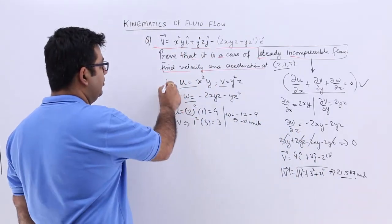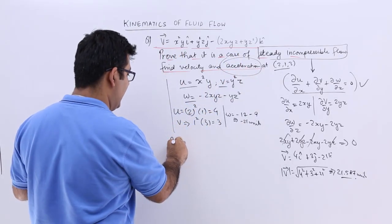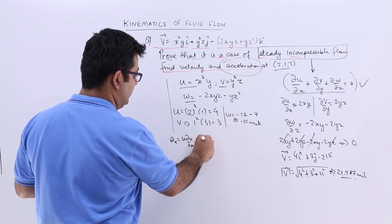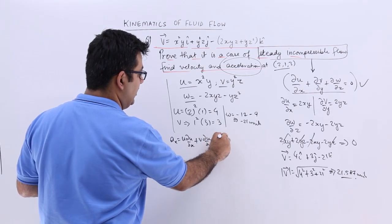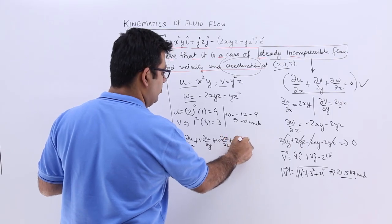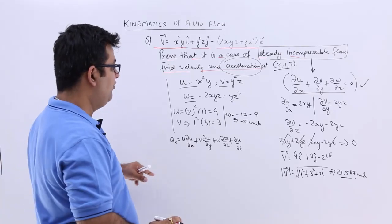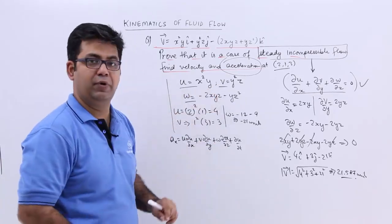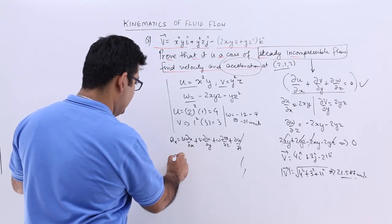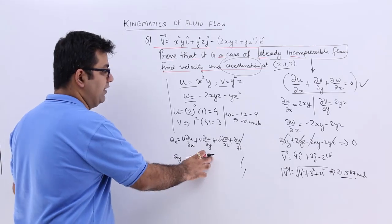Now we can find out the value of acceleration in the same manner. So we will have to find out Ax = u∂u/∂x + v∂u/∂y + w∂u/∂z + ∂u/∂t. Now you can see that there is no time dependence for all these 3 components of velocity. So all these time-derivative terms will become 0 for Ax, Ay and Az.